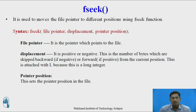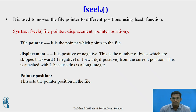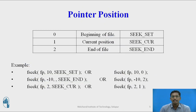The file pointer, whose position is to be changed, is passed as the first argument. The displacement is a value that is either positive or negative. If the value is positive, the file pointer moves in the forward direction; if negative, it moves in the reverse direction. The third argument, pointer position, has three possible values: 0, 1, or 2. You can pass these as integer values or as SEEK_SET, SEEK_CUR, or SEEK_END. 0 is equivalent to SEEK_SET, 1 is equivalent to SEEK_CUR, and 2 is equivalent to SEEK_END.